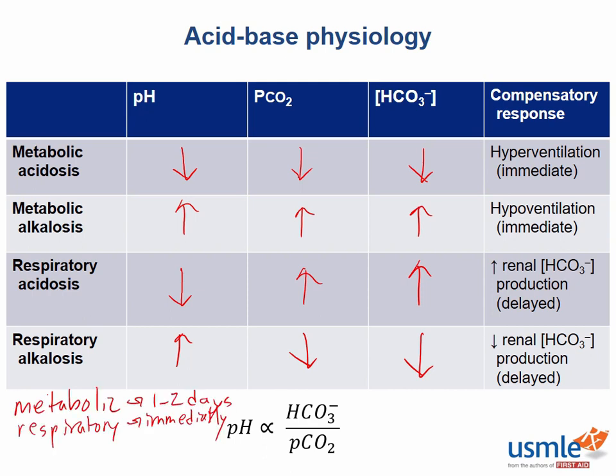Here is one more shortcut you can use to identify whether a disturbance is primarily respiratory or metabolic. If the pH and pCO2 are moving in the same direction, then the primary disturbance is metabolic. However, if the pH and CO2 are moving in opposite directions, then the primary disturbance is respiratory. This works whenever there is only one primary process occurring. Thanks for listening!